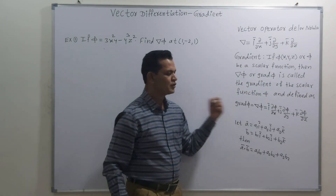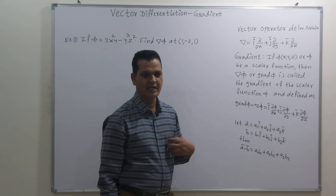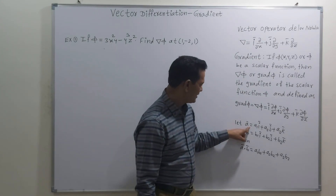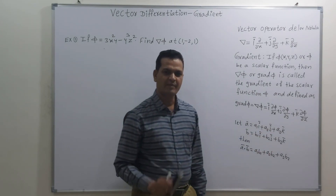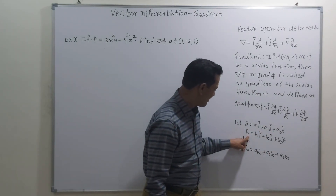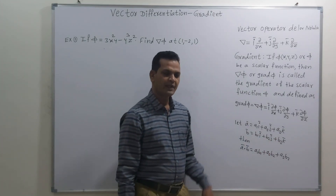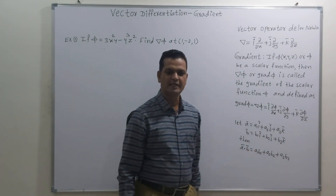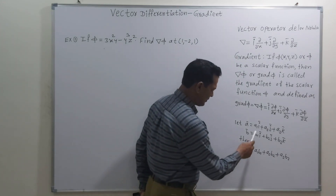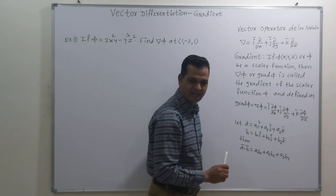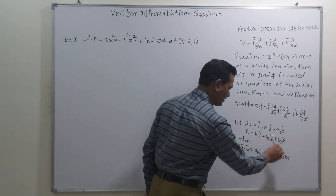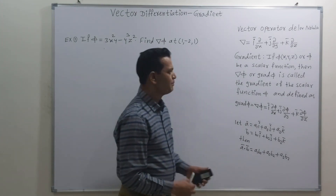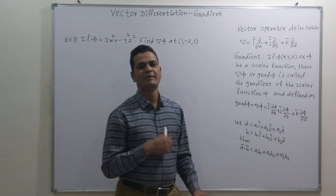Before we do examples on gradient of φ, we need one important concept: the dot product of two vectors. Suppose a-bar equals a1·i + a2·j + a3·k is one vector and b-bar equals b1·i + b2·j + b3·k is a second vector. Then their dot product is defined as a1·b1 + a2·b2 + a3·b3. That is, take the product of the i-component coefficients, the j-component coefficients, and the k-component coefficients, then add them. This is the theory required for gradient examples.